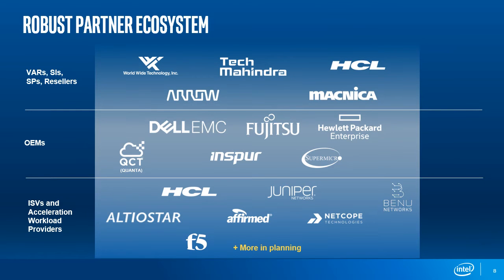Since the introduction of PAC N3000, many ecosystem partners have adopted the PAC N3000 and developed solutions that run on it. We have ISVs and TEMs such as LTO Star, HCL, F5 Networks, Juniper, and others offering networking solutions across VRAN, NFVI, and other VNF acceleration applications running on PAC N3000. Some of these workloads are currently available for commercial deployment, and we have more solutions planned on our roadmap.